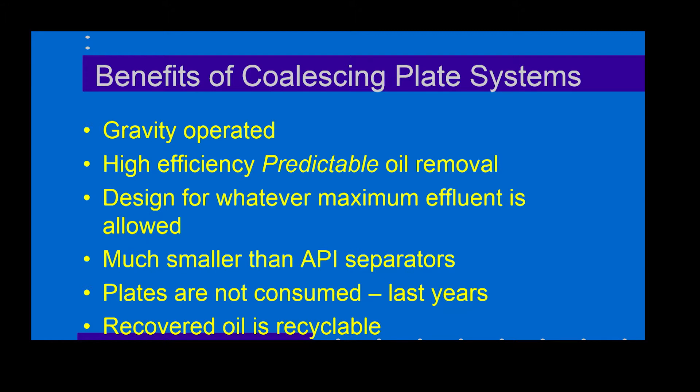The benefits of coalescing plate systems: they're gravity operated, with high efficiency and predictable oil removal. We can design for whatever the maximum effluent is required. In the U.S., that means meeting the Clean Water Act, which is usually construed to be 15 milligrams per liter or less, although some jurisdictions such as King County — which is the Seattle area — require 10 milligrams per liter or less.